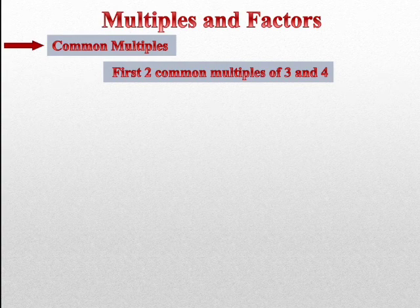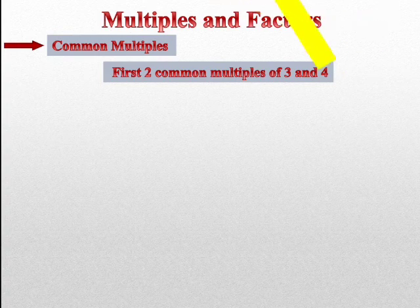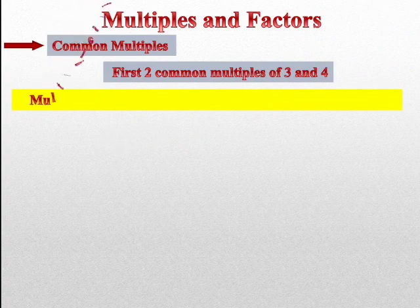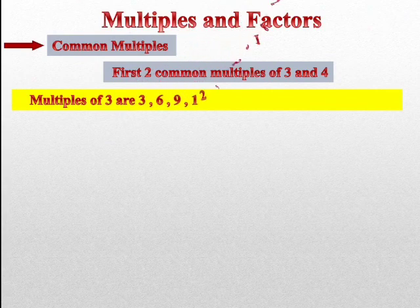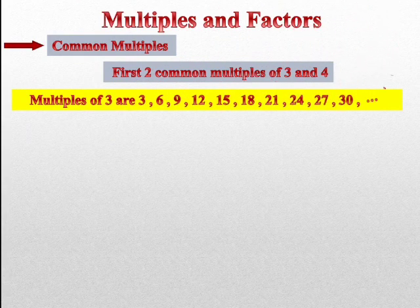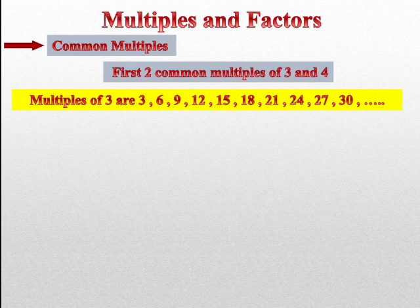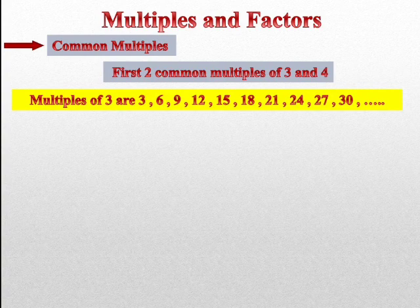Multiples yani ki multiples aapko pata hai. Multiples of 3 yani table of 3. Yaha pe hum ten tak liya hai table, yani direct liya hai: 3×1=3, 3×2=6, 3×3=9, 3×4=12, like this, okay?